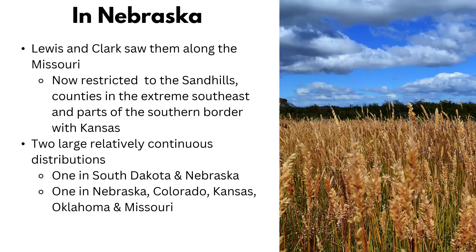Historically, Lewis and Clark saw prairie chickens along the Missouri River, which is surprising since today they're mostly restricted to the Sand Hills. There are extreme southeast Nebraska sightings near the Kansas border. There are two large continuous distributions in Nebraska — one extending from South Dakota into Nebraska, and another covering Nebraska, Colorado, Kansas, Oklahoma, and Missouri. Nebraska is part of both distributions, so our populations are doing fairly well.